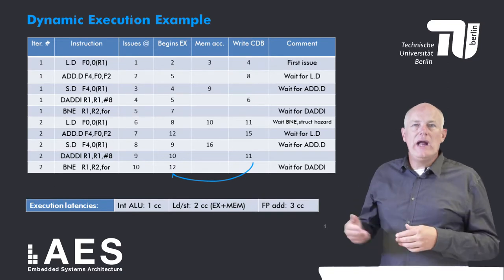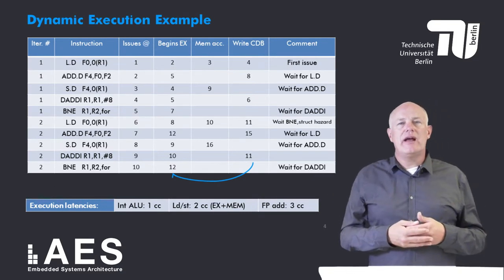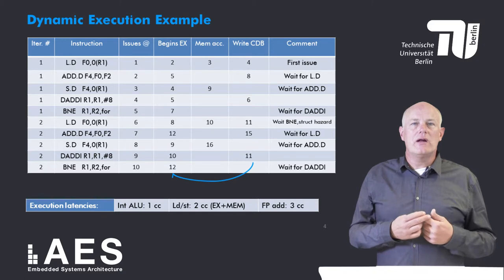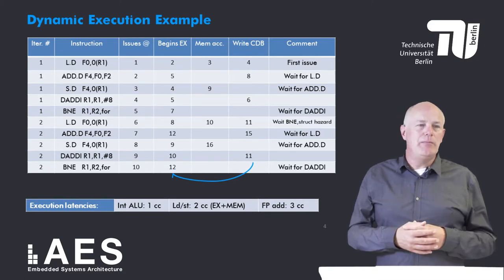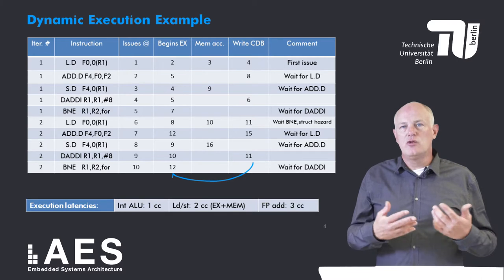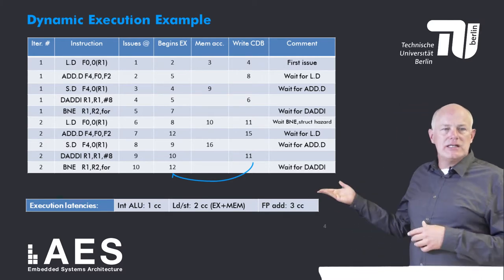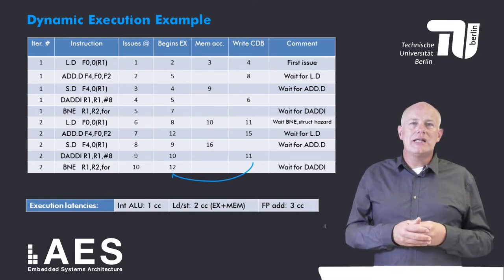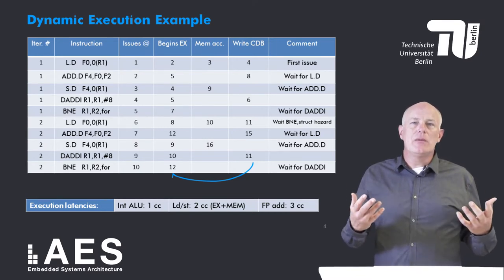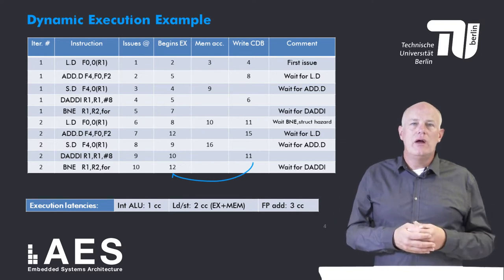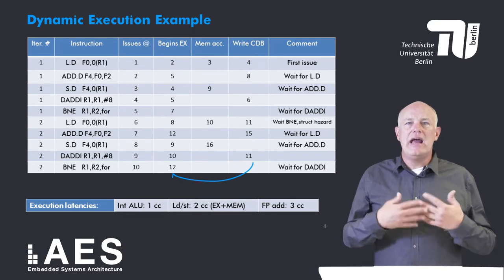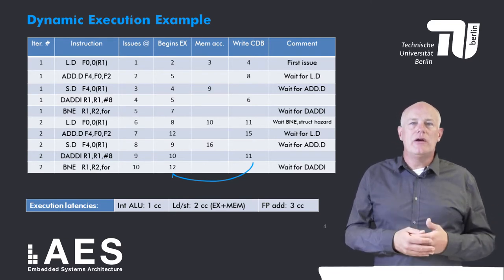Finally we have the branch that completes the second iteration of the loop. Similar to the first branch, it issues in clock cycle 10, but it cannot execute in clock cycle 11 because it has to wait for the previous add immediate to complete. Therefore it executes in clock cycle 12. This table shows how the loop is dynamically executed. It can be seen that some instructions execute and complete out of order — for example, the add immediate from the second iteration executes and completes before the preceding add double.